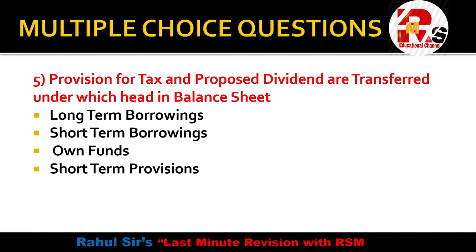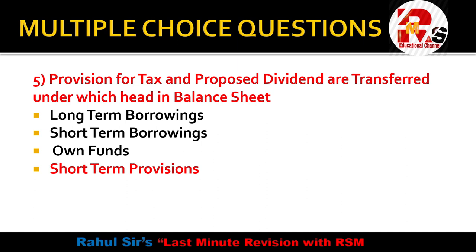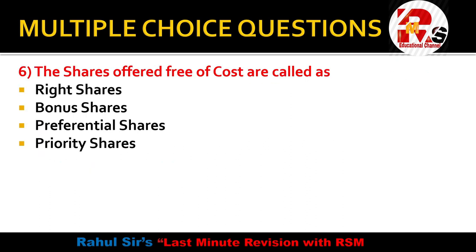Two points from here: one is Provision for Tax and one is Proposed Dividend. Both are liabilities. These will be transferred in the balance sheet under Short Term Provisions — both Provision for Tax and Proposed Dividend go under Short Term Provisions in the balance sheet. That is the right answer.